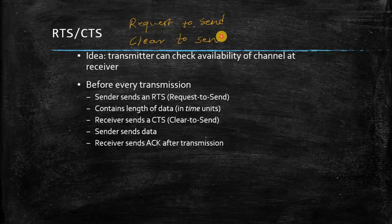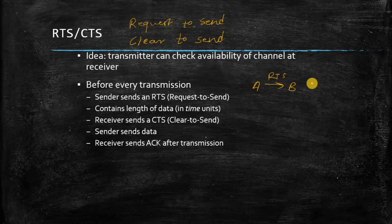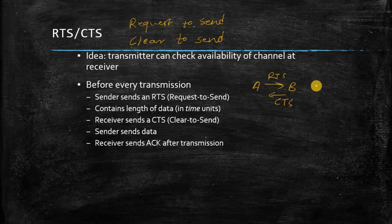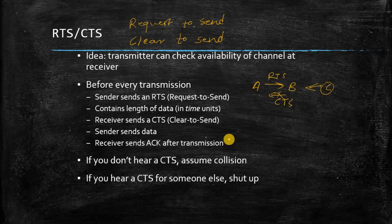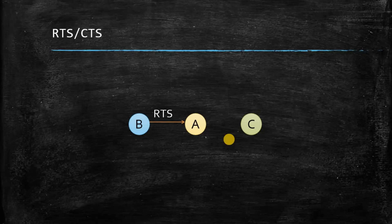RTS stands for Request to Send and CTS stands for Clear to Send. These two messages are exchanged to avoid collision. Before every transmission, the sender sends an RTS. If A wants to send data to B, it first sends the RTS, which checks whether any other channel is already sending data. If the medium is free, a Clear to Send message is returned. If busy, the sender waits for transmission to complete before receiving a CTS. The RTS contains the length of the data. The receiver sends CTS, the sender sends data, and the receiver sends an acknowledgement after transmission.